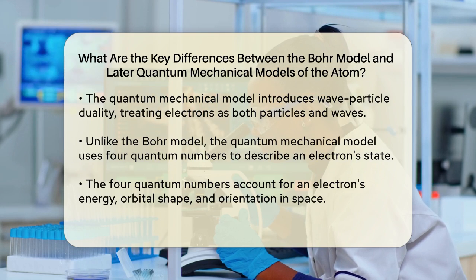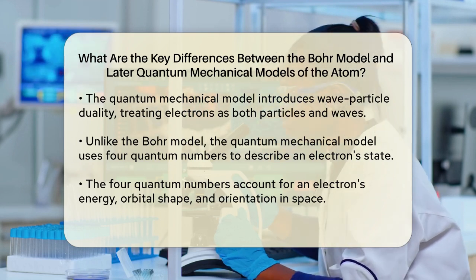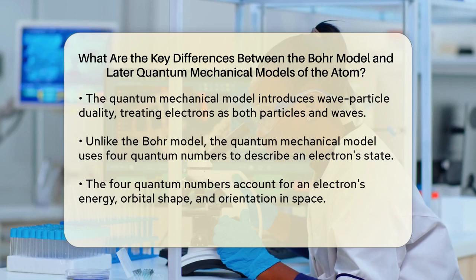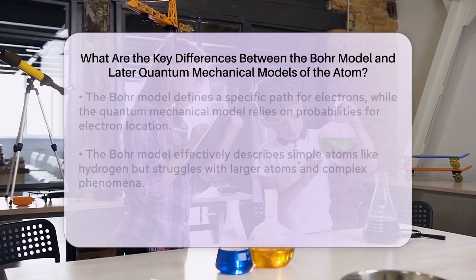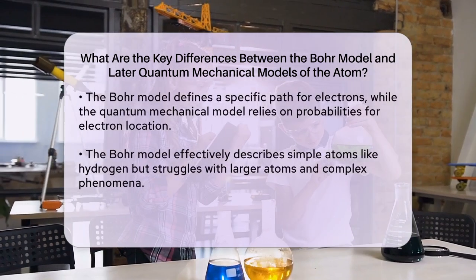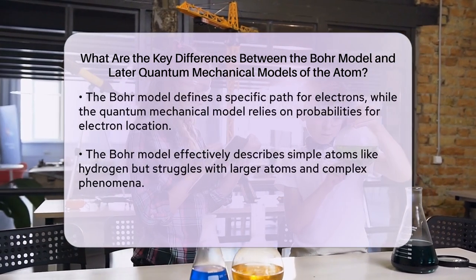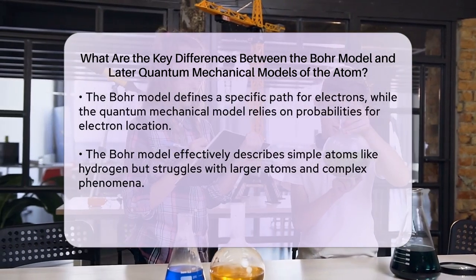Another significant difference is how the two models describe the path of an electron. In the Bohr model, the electron's path is well-defined and fixed in specific orbits. In contrast, the quantum mechanical model does not define a specific path for the electron. Instead, it relies on probabilities to determine where an electron might be found within a given region of space.